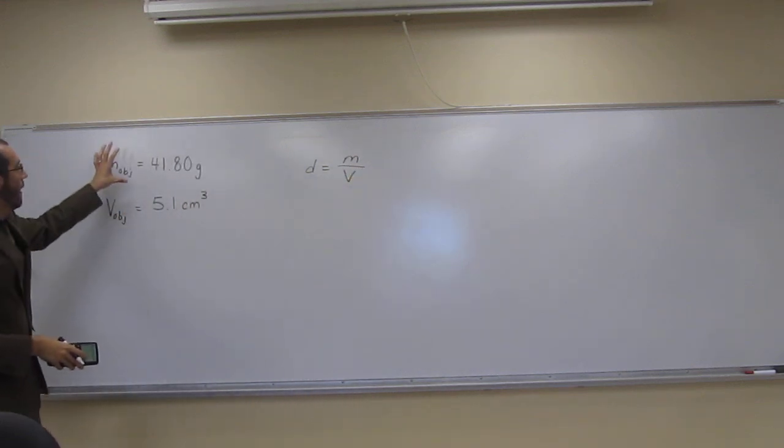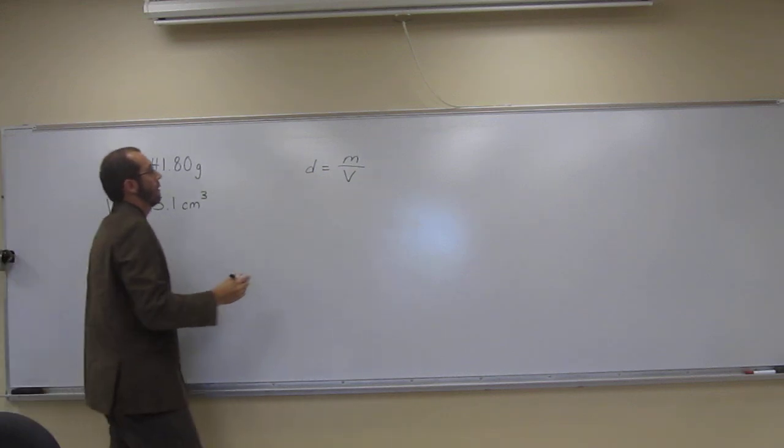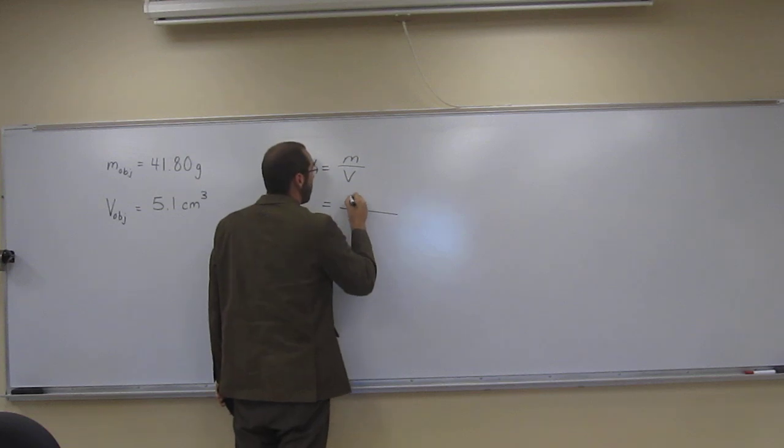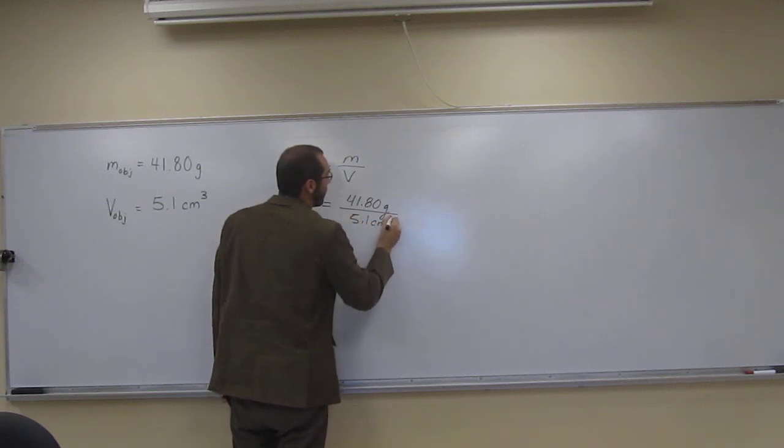We've got the mass of the irregularly shaped object, we've got the volume of it. So it's a simple, just plug and chug, right? So 41.80 grams, 5.1 cubic centimeters.